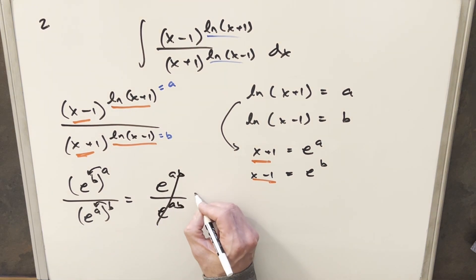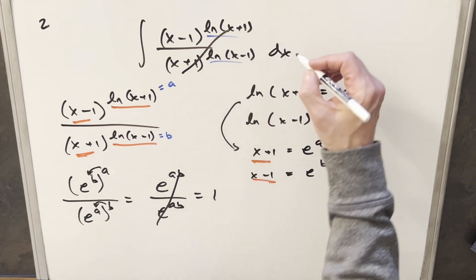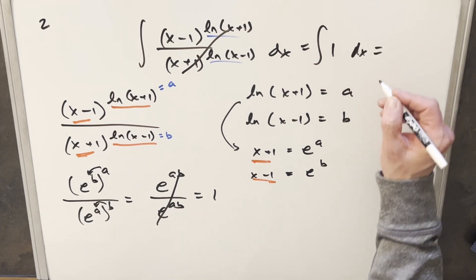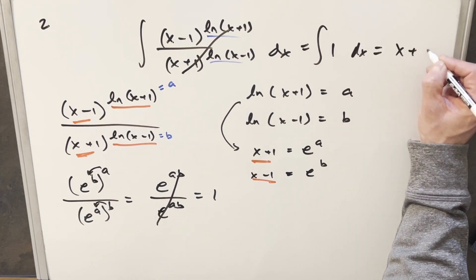Cancel everything and we just have 1. So because our whole integral is 1, we're just integrating 1 dx. And so for my final solution, we just get x plus C.